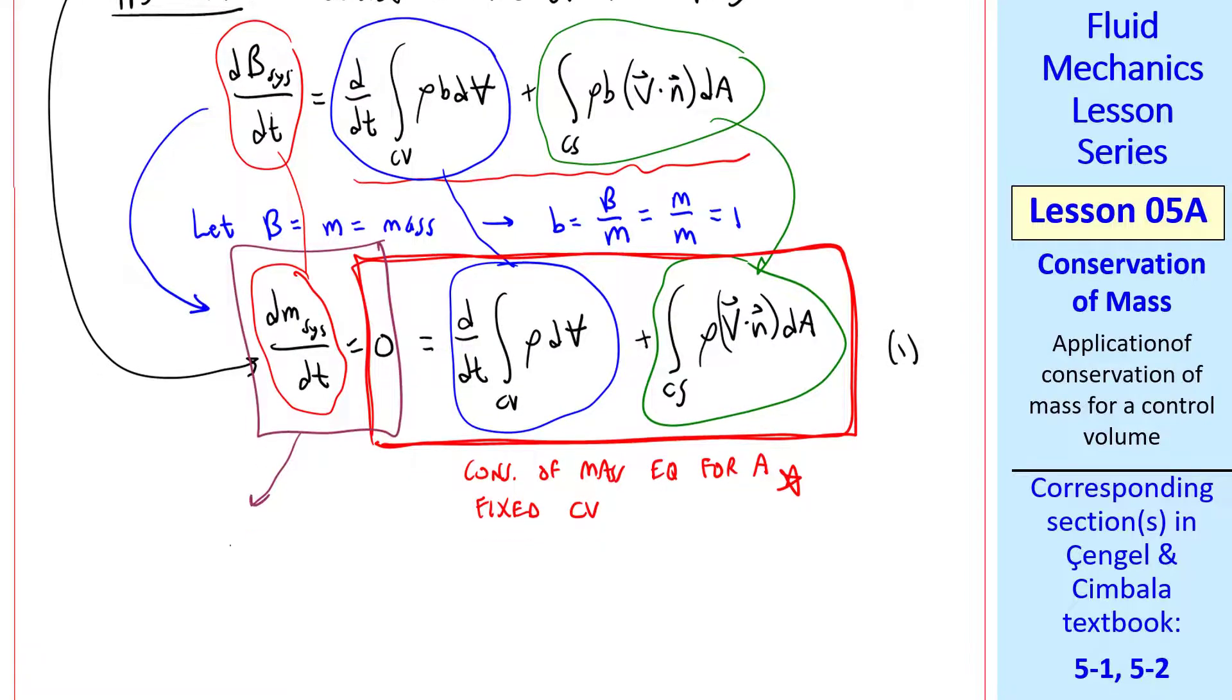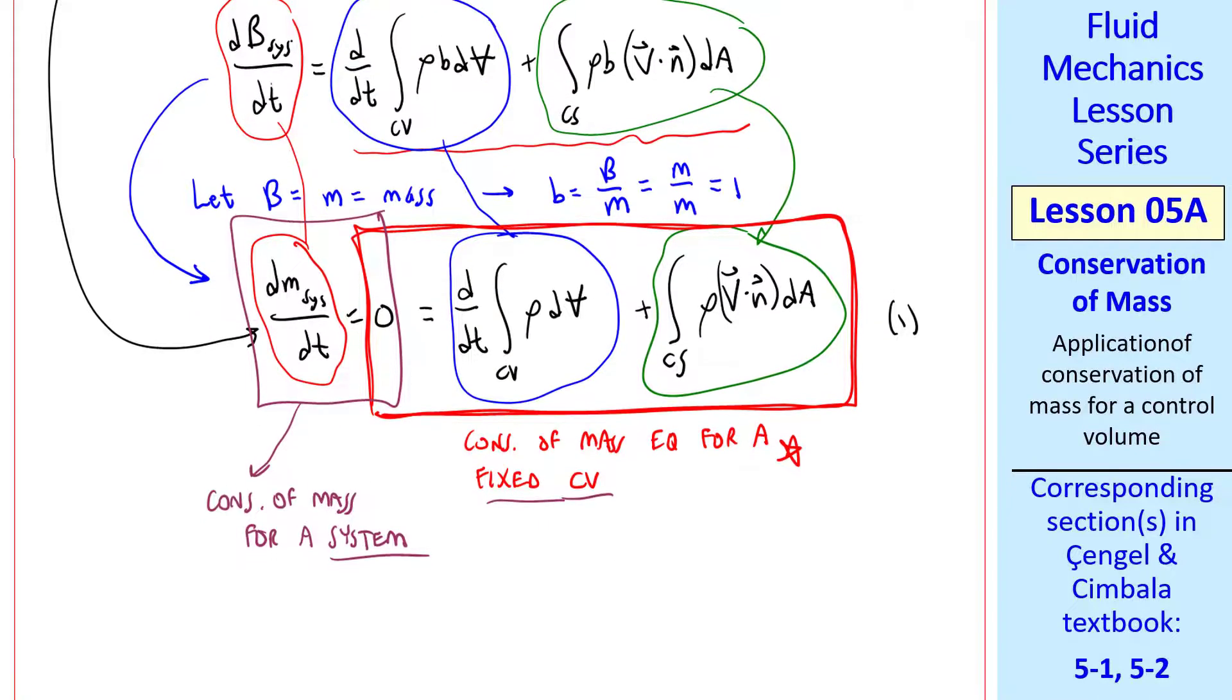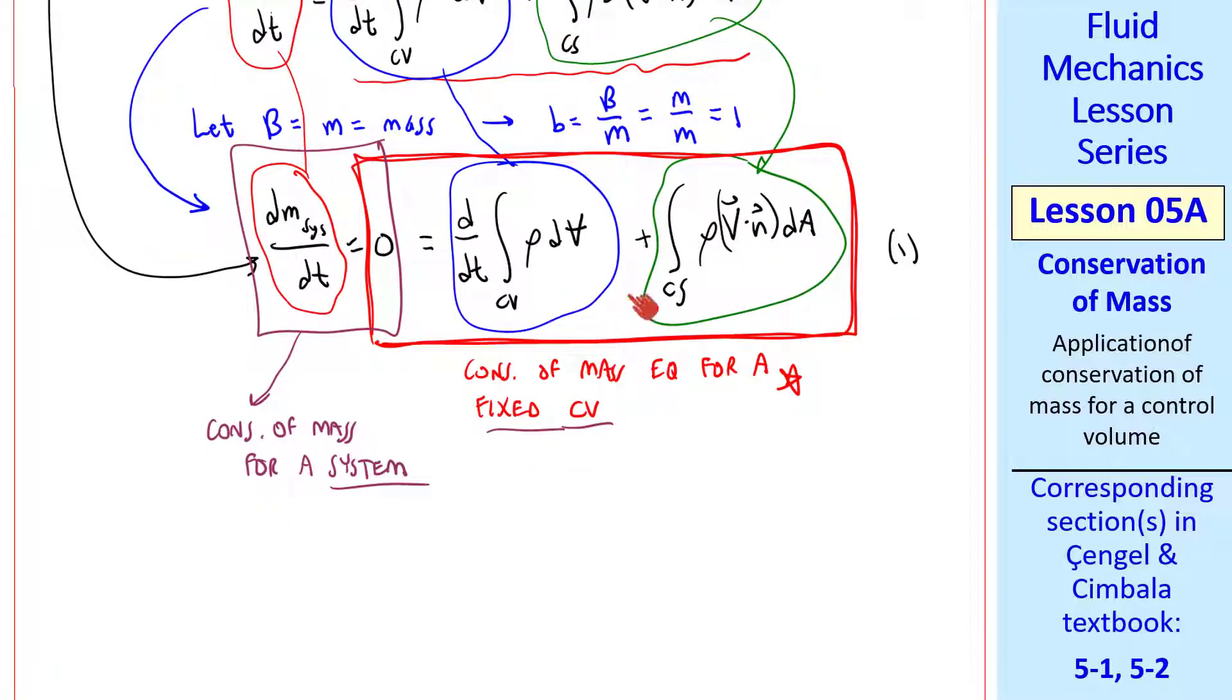The right side of this equation is our conservation of mass equation for a fixed control volume. I'll call that equation 1. So the Reynolds Transport Theorem has helped us transform from a system equation to a control volume equation. The first term in blue is the rate of change of mass within the control volume. You can also write it d dt of m control volume, which can change with time in general.